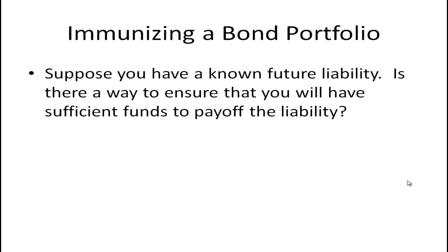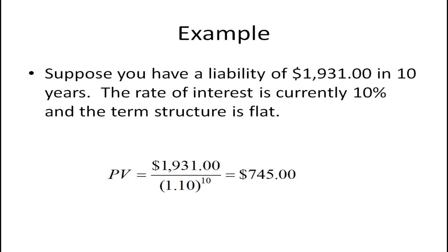The best way to see this is by looking at an example. Let's consider that we have a liability of $1,931 in 10 years. Assume that the interest rate is 10% and the term structure is flat — meaning the yield curve is flat, so interest rates are the same regardless of maturity. The present value of this liability is $1,931 divided by 1.10 raised to the 10th power, which equals $745.